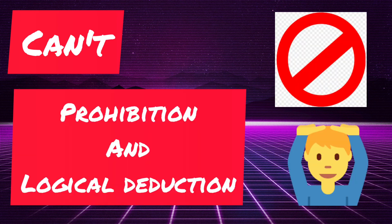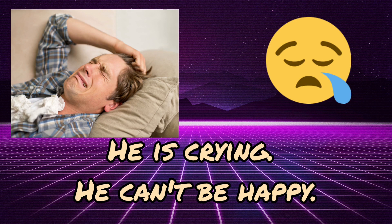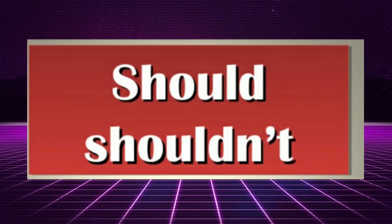Can't is for prohibition and also logical deduction. For example, 'You can't smoke here' — it is forbidden. So in this case, it is clearly used as prohibition. For logical deduction: 'He is crying. He can't be happy.' Of course, he is not happy.